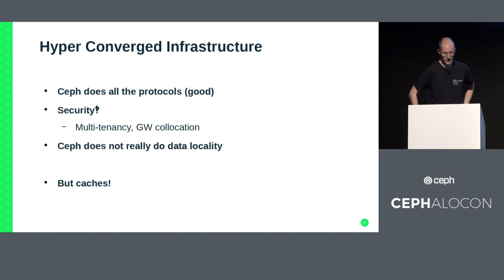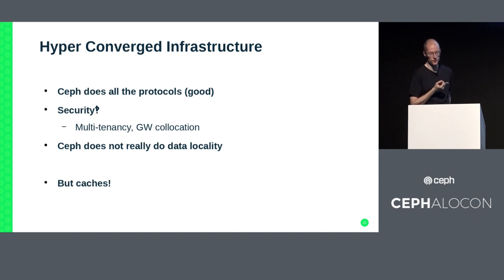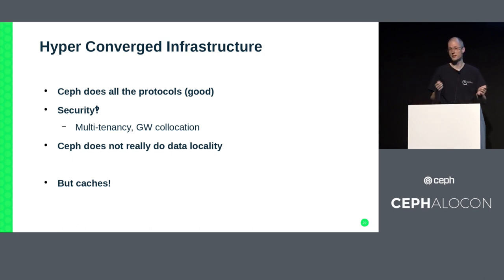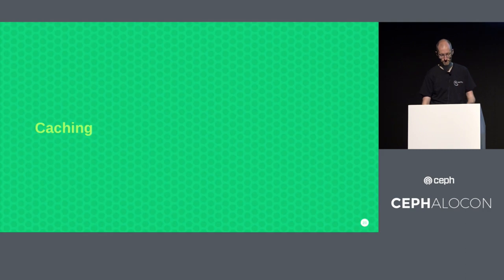Hyper-converged infrastructure - Ceph does all the protocols. Ceph does not really do data locality though. The data is distributed pseudo-randomly in your cluster, so it's probably not on the node where your workload is running. Depending on what you want to do, that can be tricky, and you can overcome some of this with caching. There are several places where you could cache: local to the workload from a cluster perspective as a client-side cache, a cache tier, at the OSD level with its in-memory cache, or even below the OSD level with DM cache built into LVM, bcache, or the Intel iCache solution.